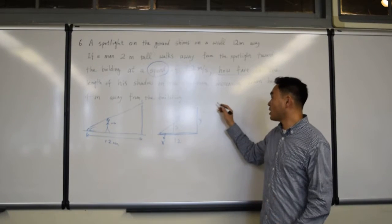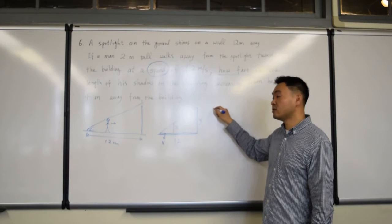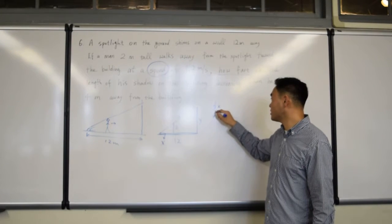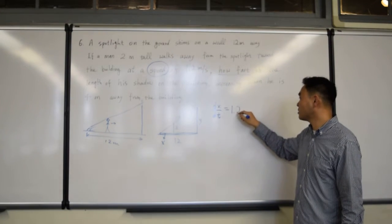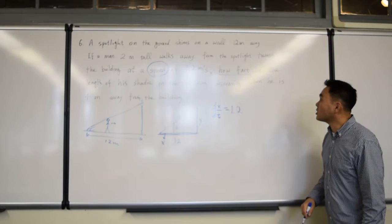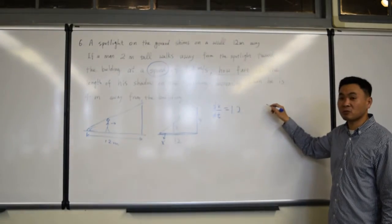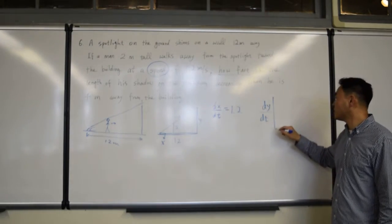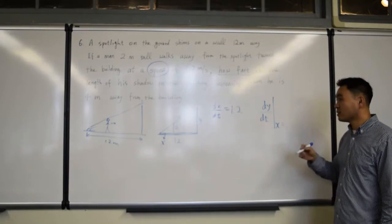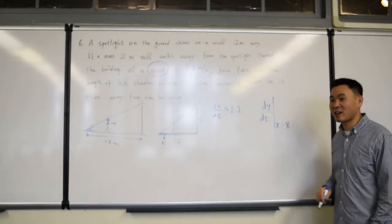All right, first, speed is 1.2. How do you write that down? dx/dt equals to 1.2. And what's the question asking for? What are we supposed to find? dy/dt when x is? Or 4. No. 8. 8. Why 8? Where did 8 come from?